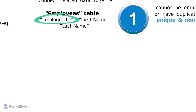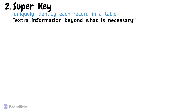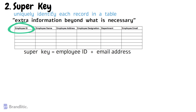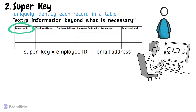Number two: what is a super key? In DBMS, a super key is a set of one or more columns that can uniquely identify each record in the table. Think of it as a key that has extra information beyond what is necessary to uniquely identify a record. For example, in a table of employees, the employee ID alone can uniquely identify each employee. However, a super key could be a combination of employee ID along with other columns like email address, meaning that this combination can also be used to uniquely identify each employee. The super key contains more information than the minimum required and provides flexibility in selecting different combinations of columns to identify records uniquely.